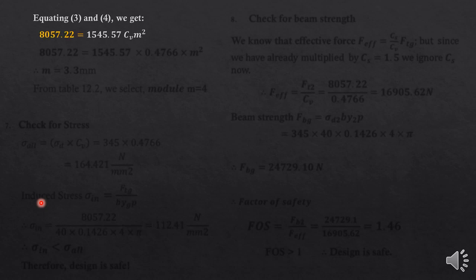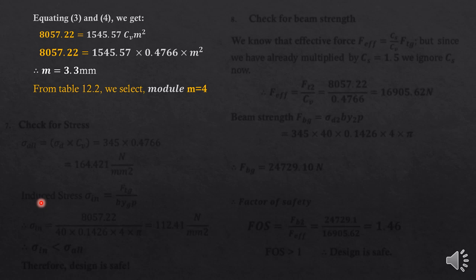By equating the power equation result and the Lewis equation, we solve for module and get 3.3 mm. From table 12.2, the nearest first preference standard value is 4. Therefore, module M = 4. Going forward, we need to check whether this choice of module is appropriate.